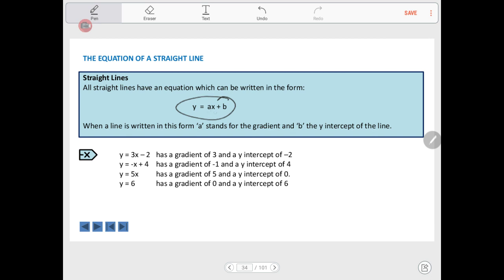And then we have some number in front of x plus a number. Now, I know that they aren't numbers at the moment, a and b, but for any particular straight line equation, they will be numbers, like if you look down here.